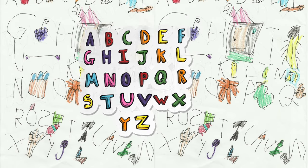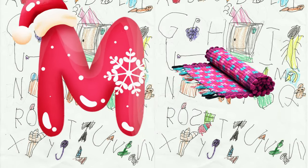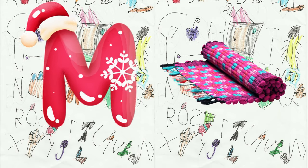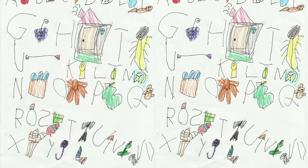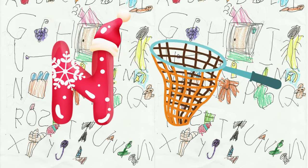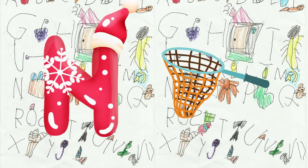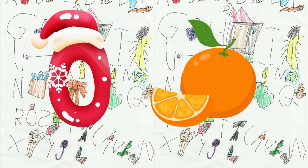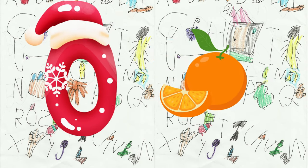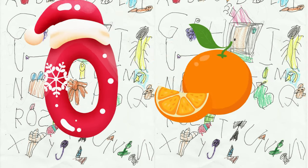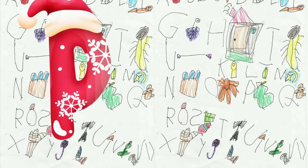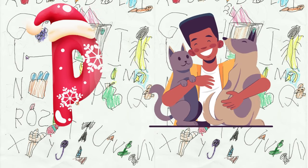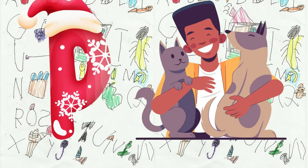M is for mat, m-m-mat. N is for net, n-n-net. O is for orange, o-o-orange. P is for pet, p-p-pet.